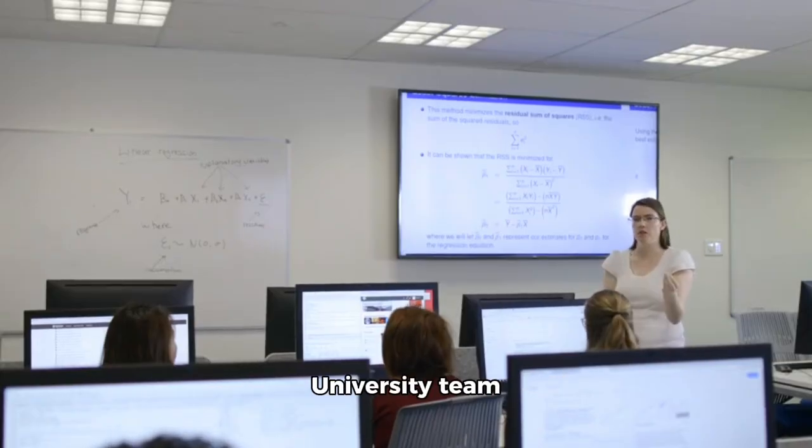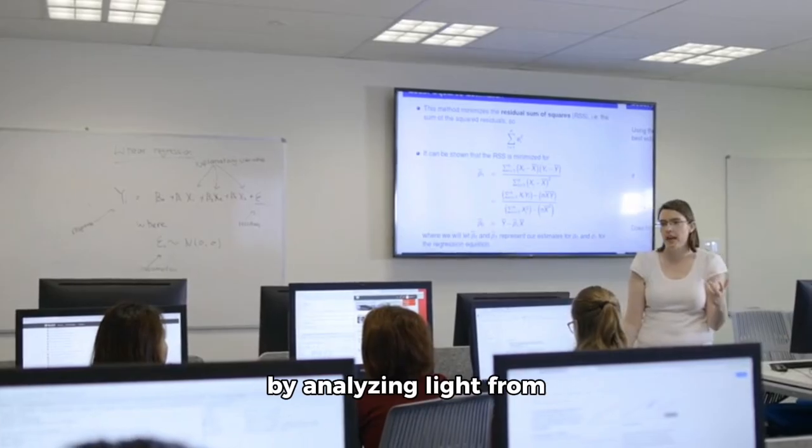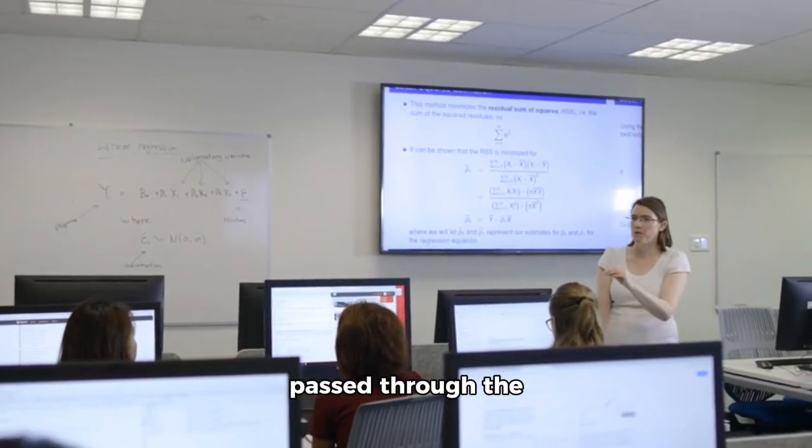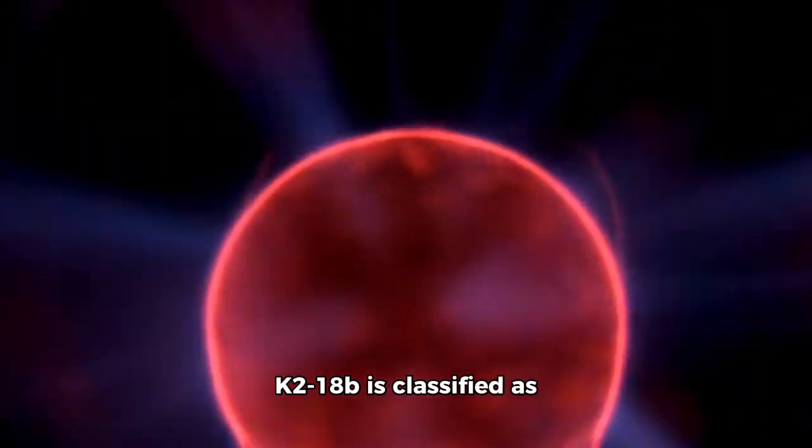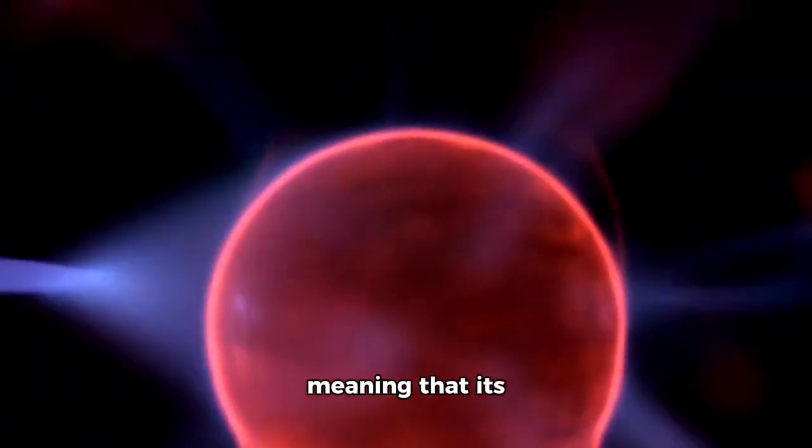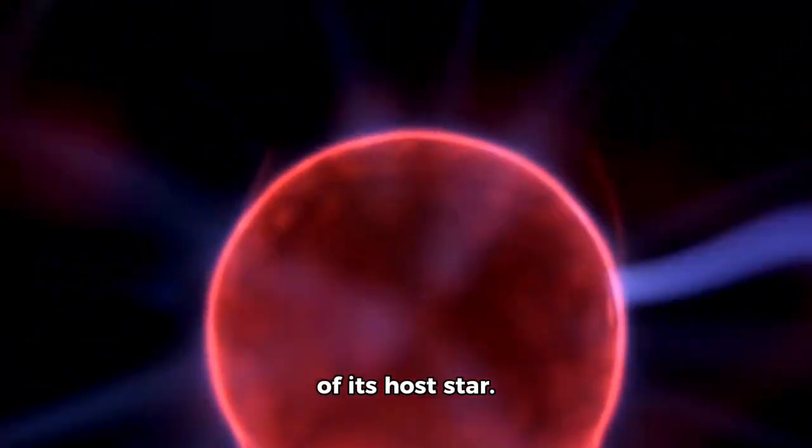A member of the Cardiff University team explained that this challenge was overcome by analyzing light from K218b's host star as it passed through the planet's atmosphere. K218b is classified as a transiting exoplanet, meaning that its brightness decreases when it crosses in front of its host star.